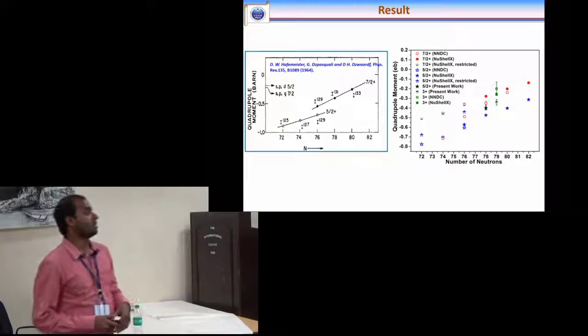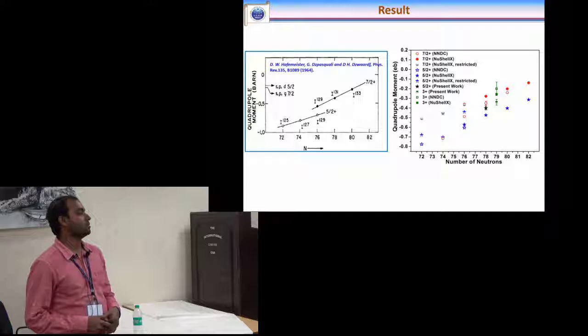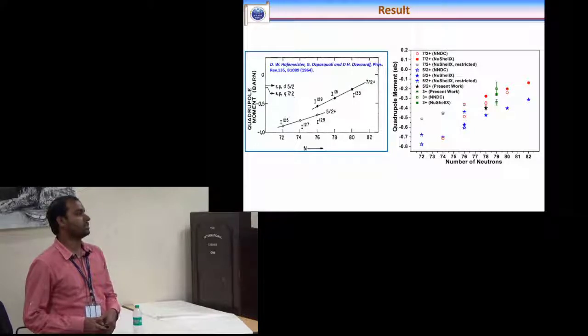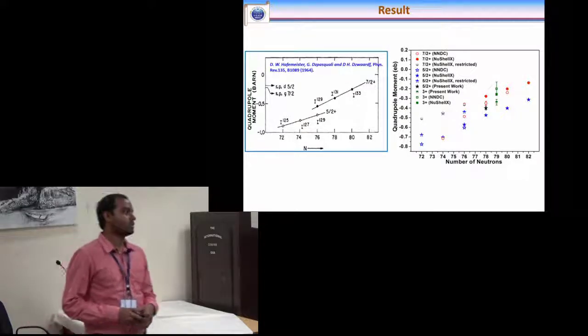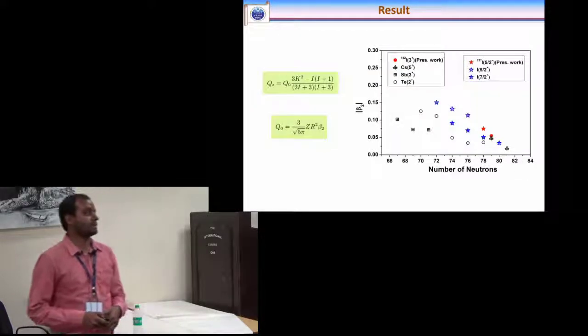Then we have systematically calculated all the isotopes of iodine for these two levels and plotted as a function of neutron numbers and compared with the experimental data and we saw that there is no discrepancy between the theoretical and experimental result.